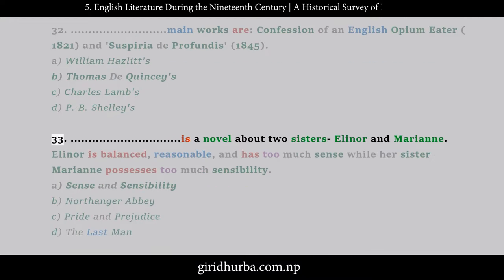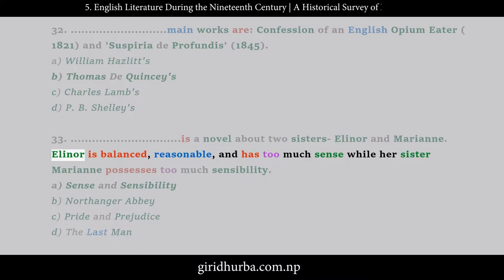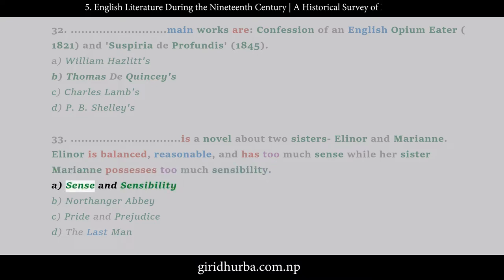Question 32: __ main works are Confession of an English Opium Eater (1821) and Suspiria de Profundis (1845). A. William Hazlitt's, B. Thomas De Quincey's, C. Charles Lamb's, D. P.B. Shelley's. Question 33: __ is a novel about two sisters, Eleanor and Marianne. Eleanor is balanced, reasonable, and has too much sense, while her sister Marianne possesses too much sensibility. A. Sense and Sensibility, B. Northanger Abbey, C. Pride and Prejudice, D. The Last Man.